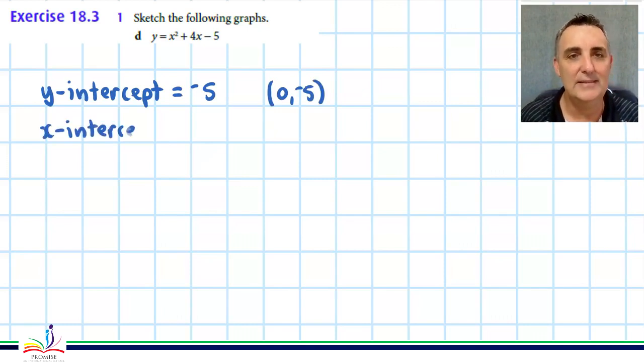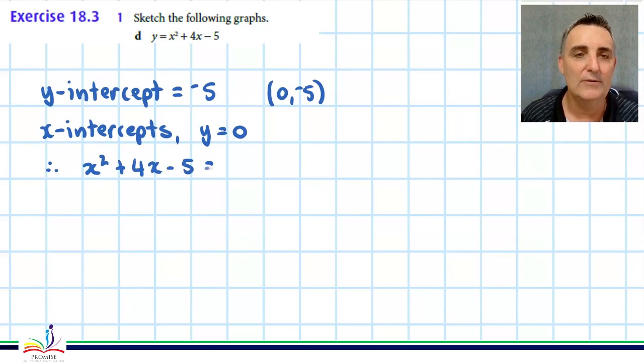To find the x-intercepts, we make y zero and try to solve that equation. The way to solve it—there are three ways—we try the easiest way first, by inspection. We're looking for two numbers that multiply to negative 5 and add to 4.